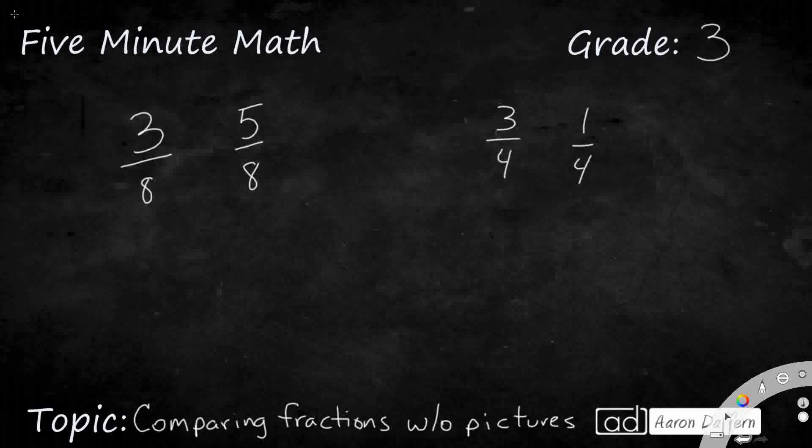So remember, our denominators tell us how many pieces that whole is broken up into. And in this case, we're going to be comparing 3-8ths and 5-8ths.